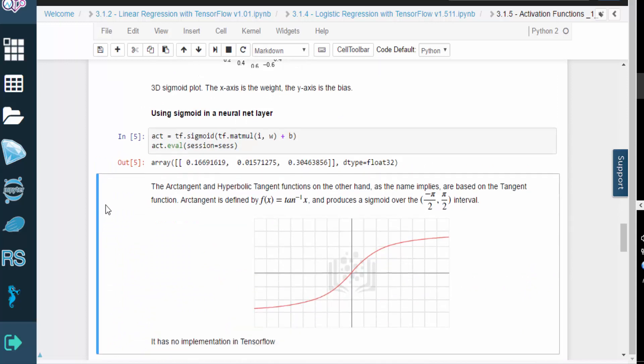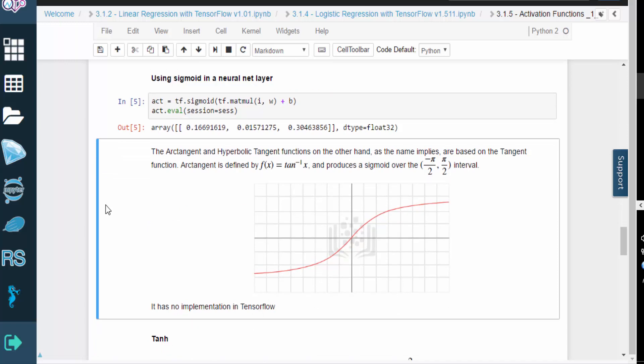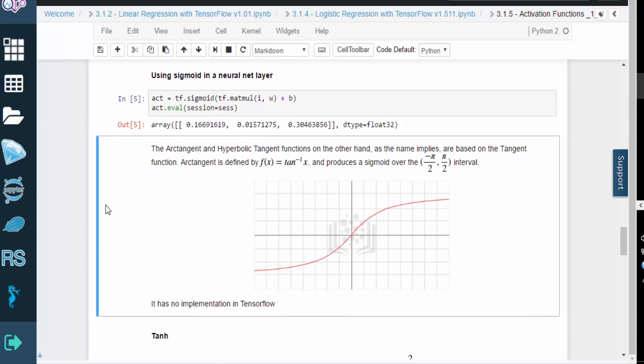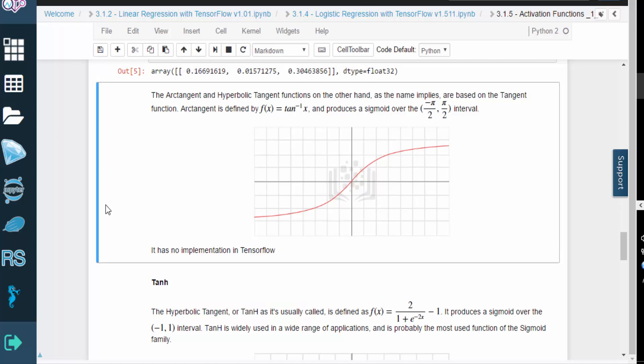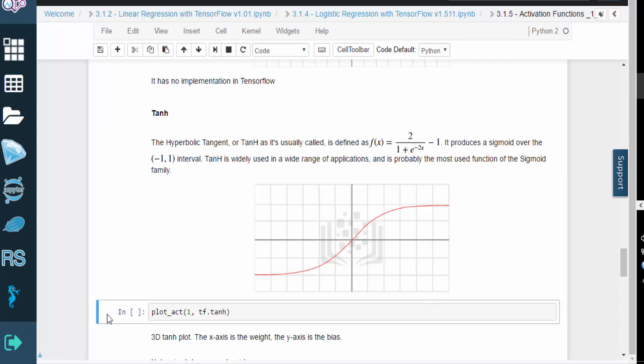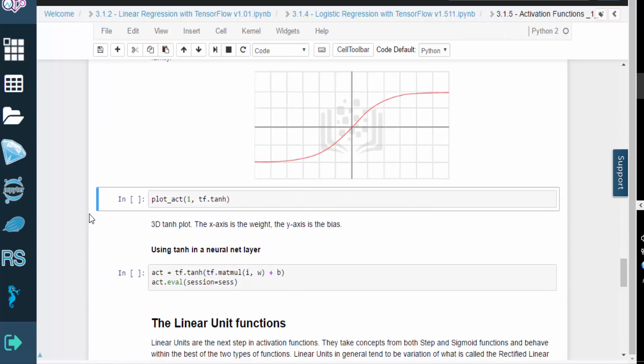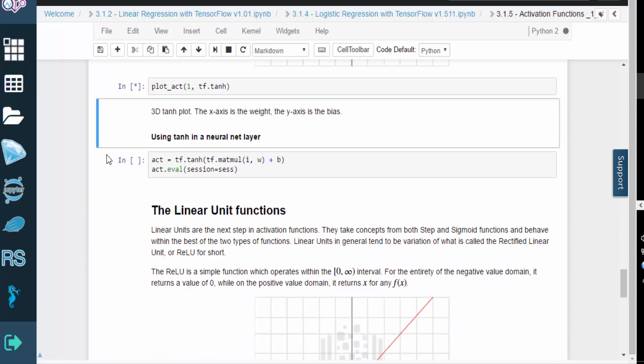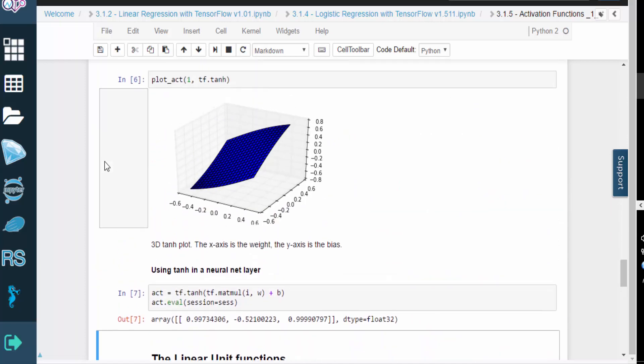The arctangent and hyperbolic tangent functions are both based on the tangent function, as implied by the names. Arctangent is defined here and it produces a sigmoid over this interval. Keep in mind TensorFlow does not include arctangent. The hyperbolic tangent, or tanh as it's usually called, is defined like this. It produces a sigmoid over the open interval from negative 1 to 1. Tanh is used in a wide range of applications, and it's probably the most popular function of the sigmoid family.